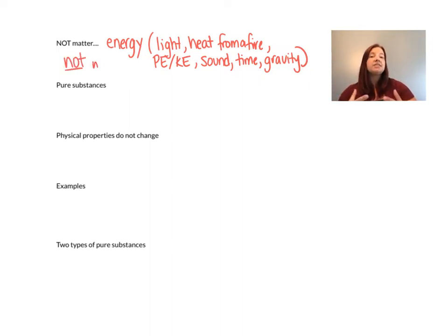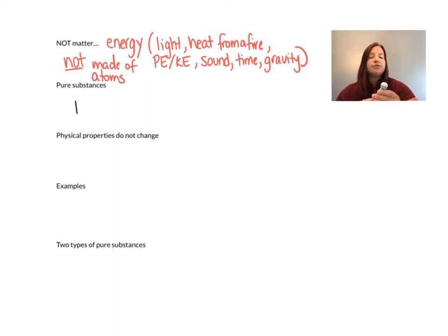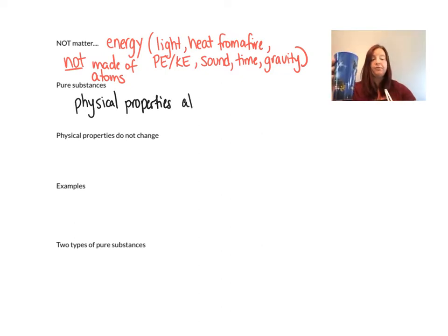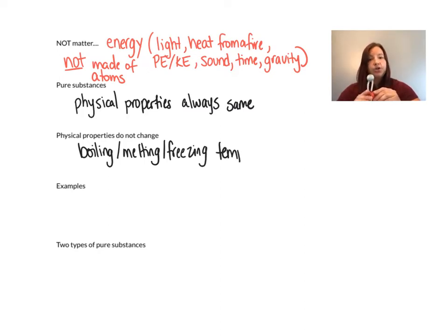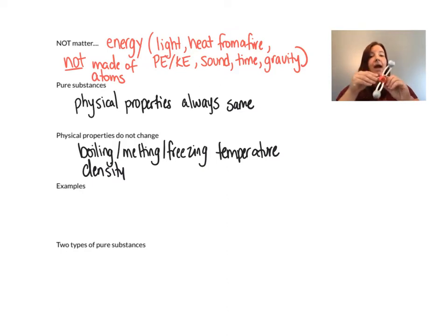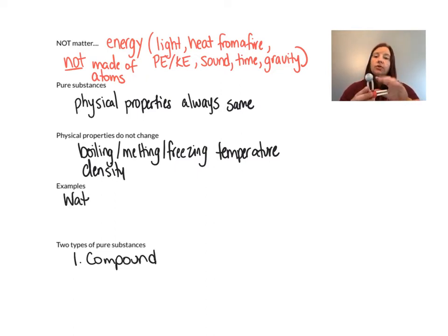We take matter — things made up of atoms — and divide it into two different groups: pure substances and not pure substances. Pure substances means the physical properties do not change. A molecule of water, whether I have one molecule or a whole cup full, is always going to melt and freeze at zero degrees Celsius, always have the same density, and always boil at 100 degrees Celsius. Water is a compound — that is one of two types of pure substances. Another type of pure substance includes elements.